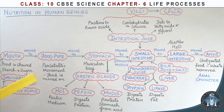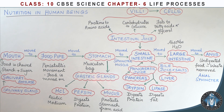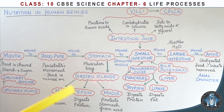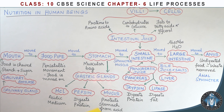The food pipe is a narrow pipe that moves food through peristaltic movement. The stomach is a muscular bag that stores food. The gastric glands produce three secretions: HCl (hydrochloric acid), pepsin, and mucus. HCl creates an acidic medium so pepsin can digest proteins in our food.